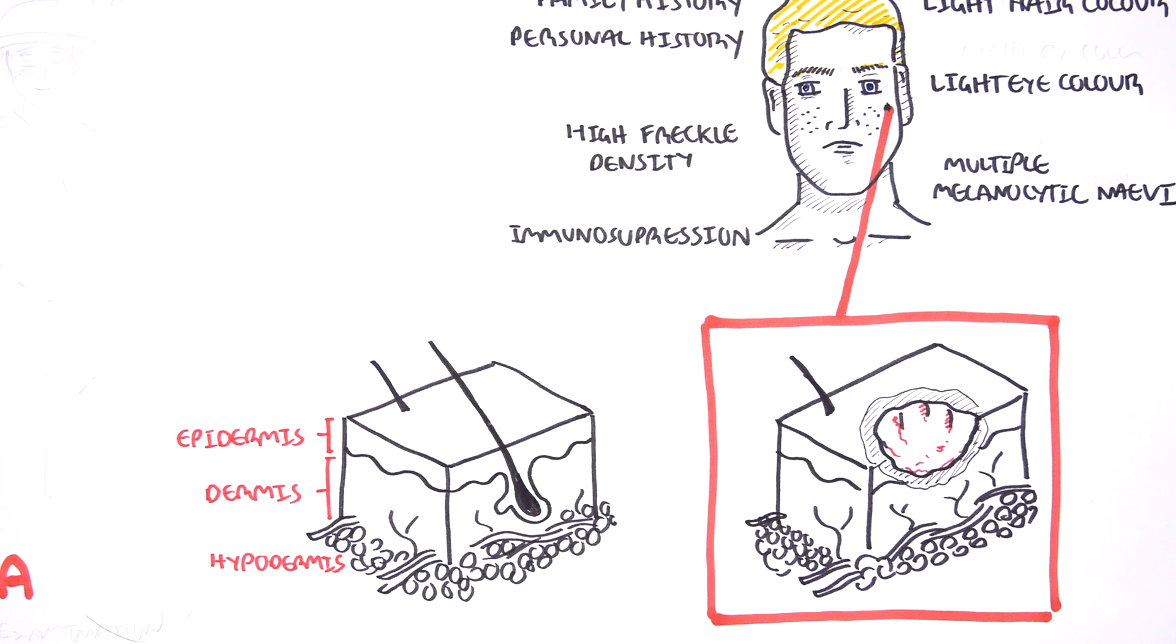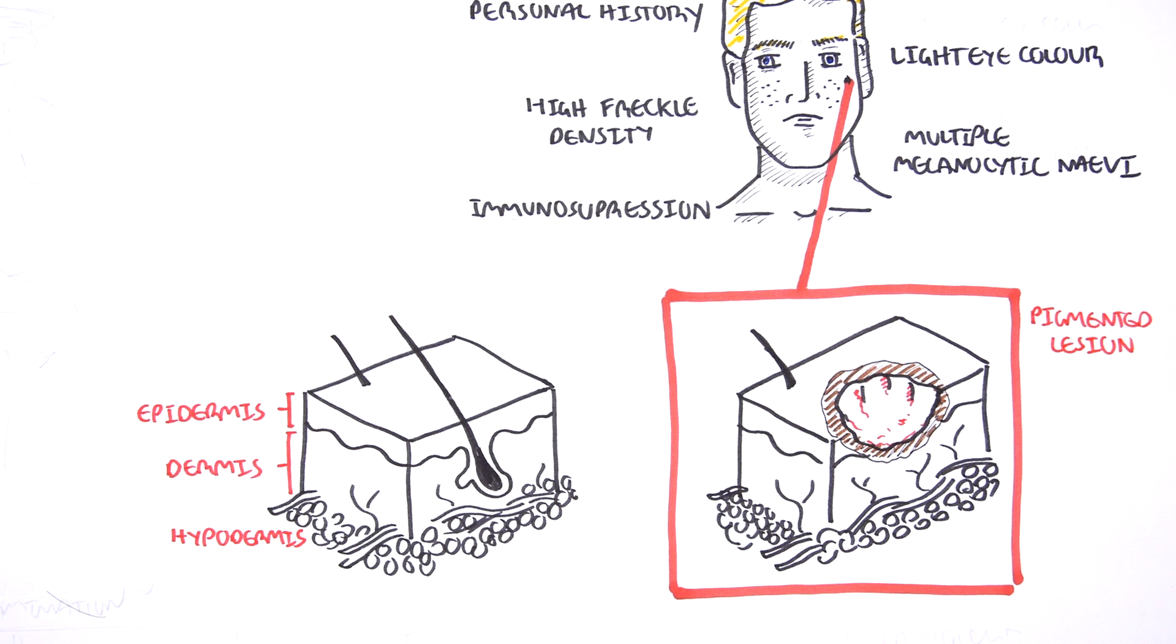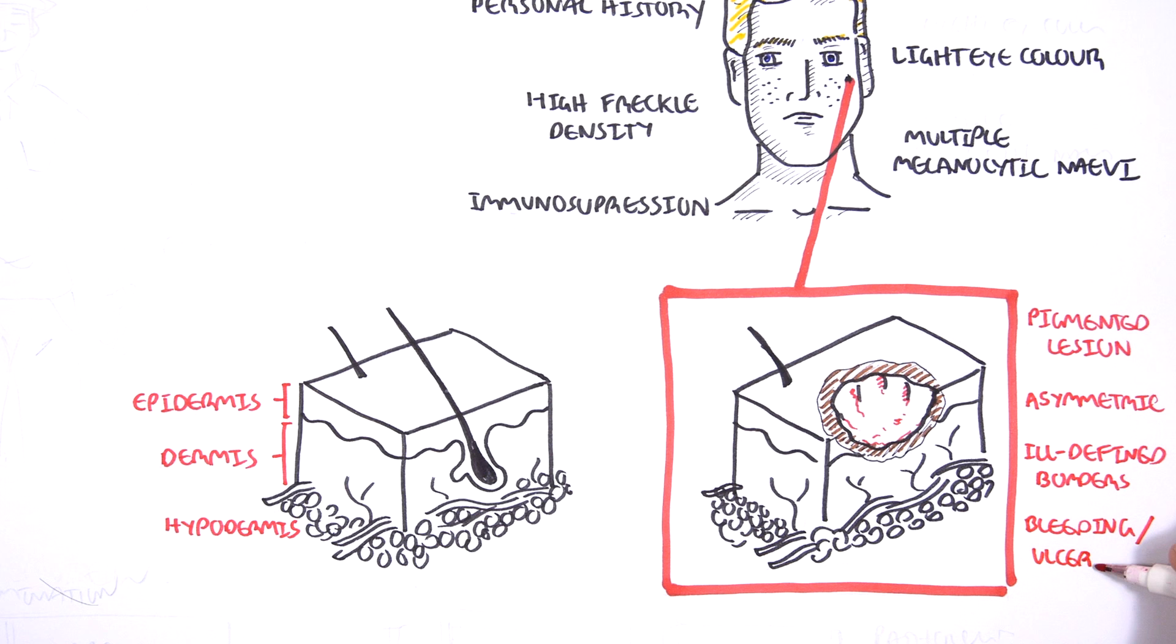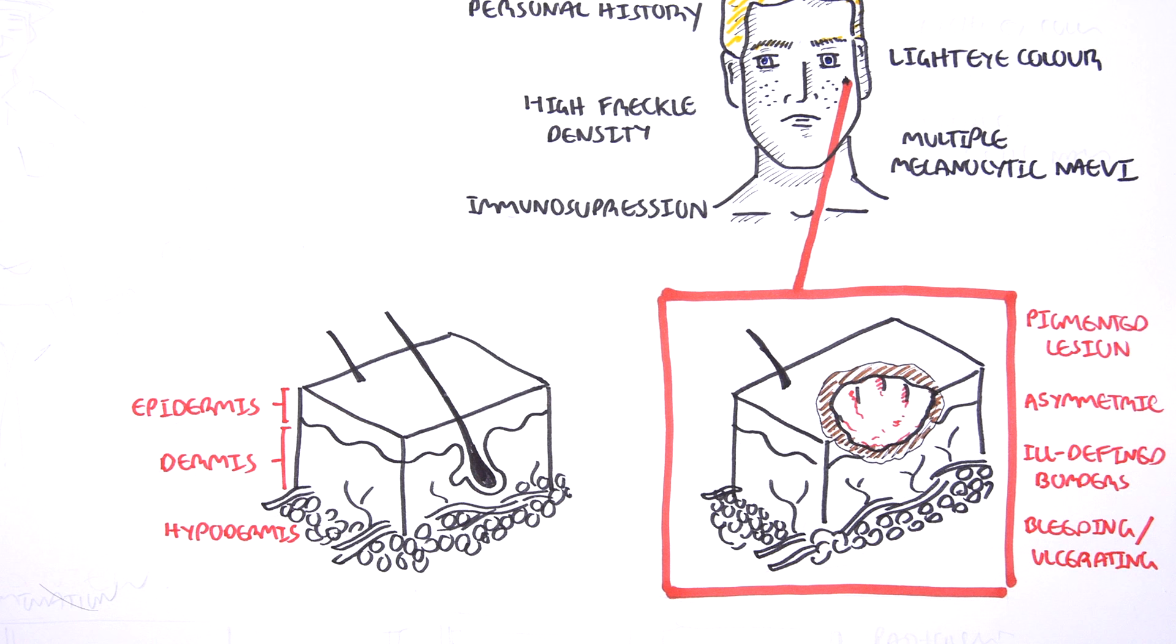As I mentioned, melanoma is different in each individual. However, melanoma is usually always pigmented. It's a pigmented lesion, it's often asymmetric, it has ill-defined borders, and melanoma often bleeds and or ulcerates.